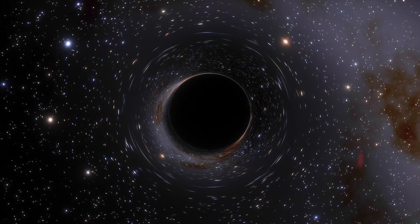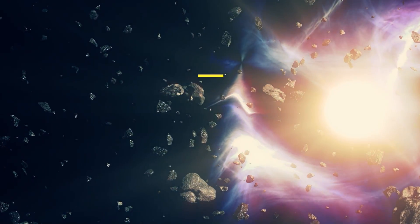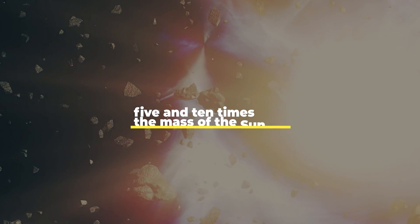Stellar black holes are much smaller. They're created when a very massive star collapses and usually weigh between five and ten times the mass of the Sun.